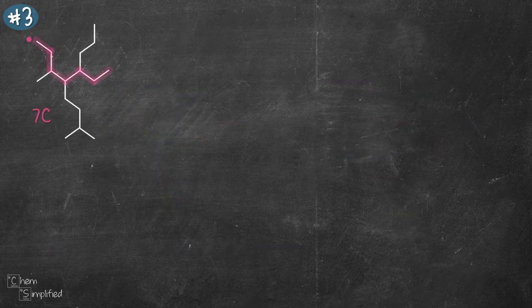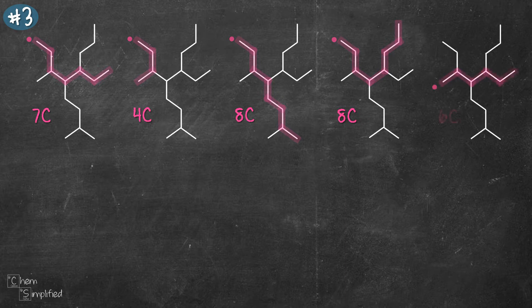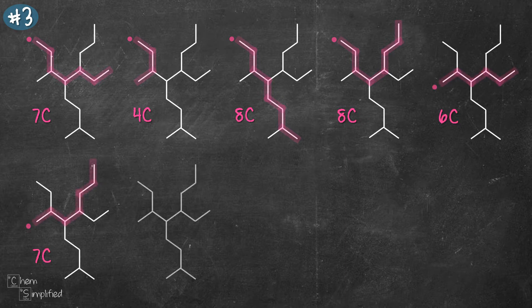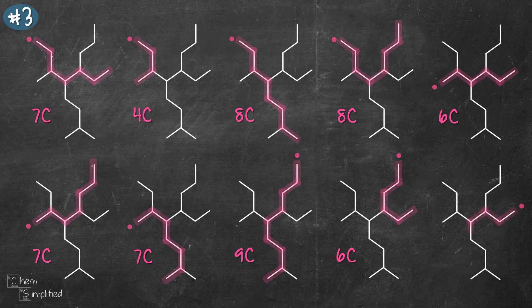Moving on to the third and final structure — what was the longest chain you counted? Since there are so many branches in this compound, we need to consider all the possibilities. The longest chain we can find is 9 carbons.